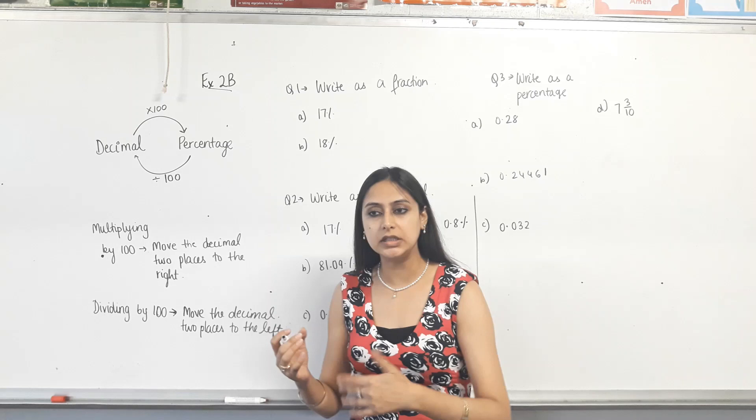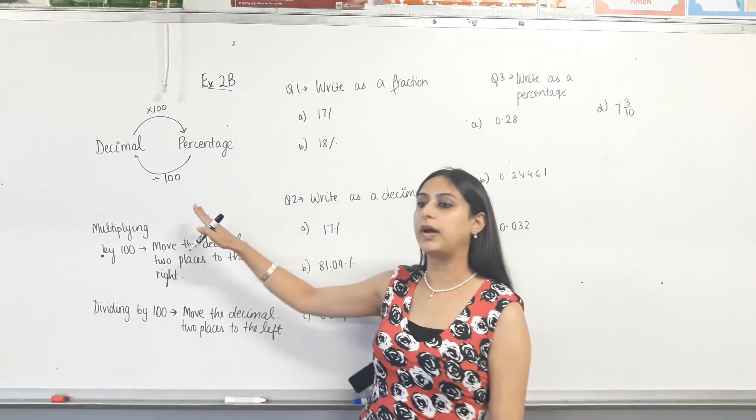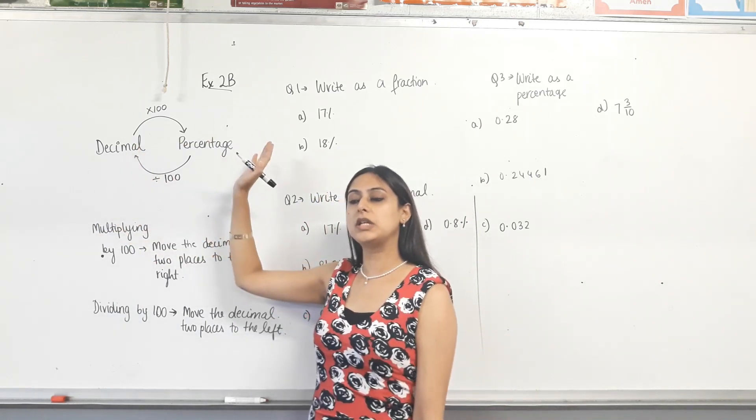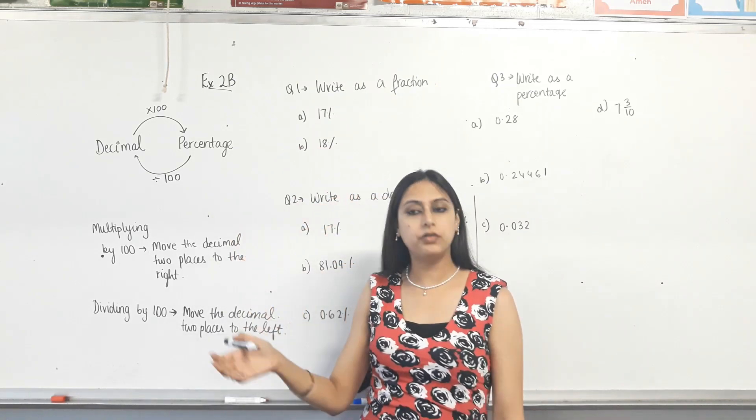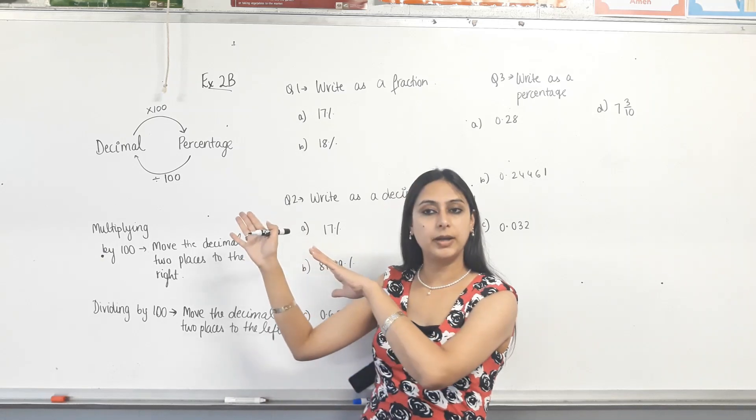If you're converting a percentage into a number, whether it's a fraction or a decimal, you divide by 100. So it doesn't matter whether there was a fraction here or a decimal. Converting from a decimal or a fraction to a percentage, what do we do? Times by 100. And going from a percentage to a decimal or a fraction, we divide by 100.